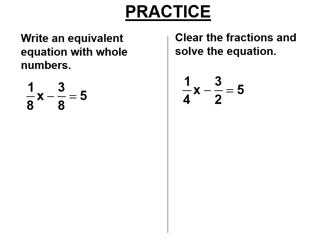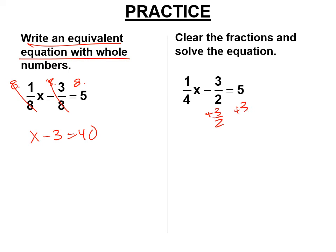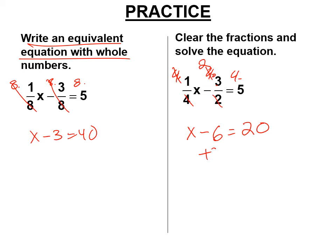Let's practice. The first one, we're going to multiply everything by 8 — cancel, cancel — and you get x minus 3 equals 40. The problem said write an equation with whole numbers; you didn't have to solve it. The next one says clear the fractions and solve. It is possible to solve it by adding 3/2 to both sides, but it's way harder. After today you could do that, but today you have to clear fractions. So multiply both entire sides by 4. The 4s cancel; the 2 cancels the 4 and becomes a 2. We get x minus 6 equals 20. Add 6 to both sides.